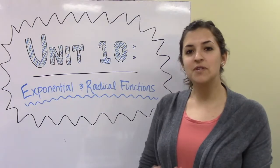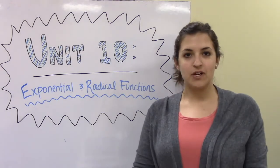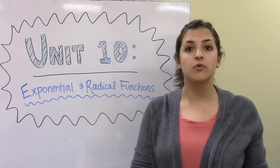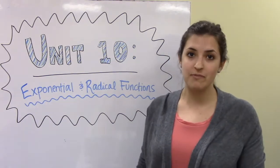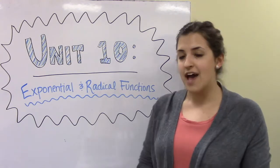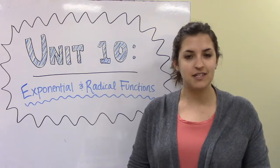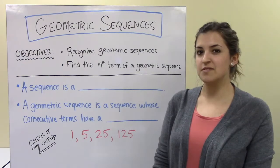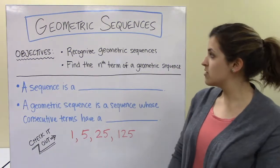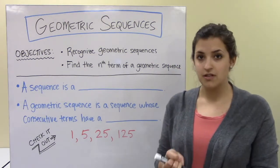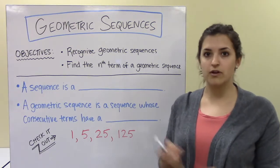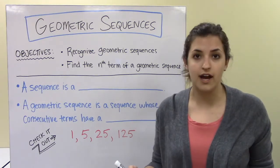Hi everyone, and welcome to unit 10. In this unit, we're going to be talking about exponential and radical functions, moving on from quadratic and looking at a different type of function. But to start us off, we're going to have to start looking at geometric sequences, and that's going to be the focus for today's lesson. By the end, we'll be able to recognize geometric sequences and find the nth term — in other words, find any term you want out of a geometric sequence.